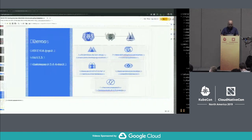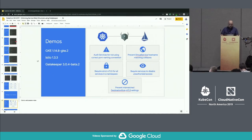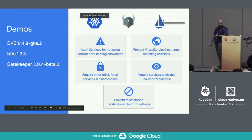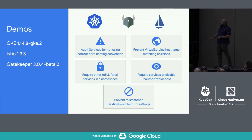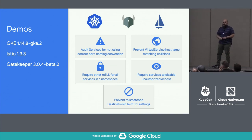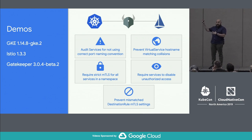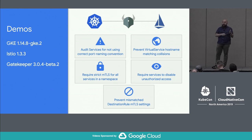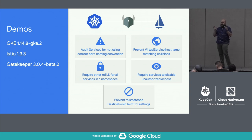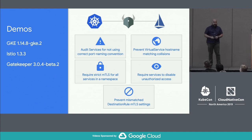We didn't cover all of them — preventing virtual service hostname collisions, requiring services to disable unauthorized access — but I have a link to the GitHub repo where all of these examples are with more detail. I'm hoping to eventually push them into the Gatekeeper contrib policy library so we can create a large base of these things to share with everybody.